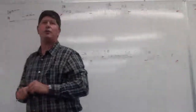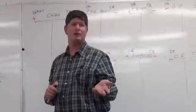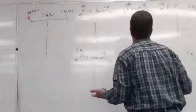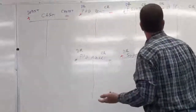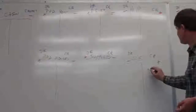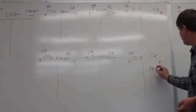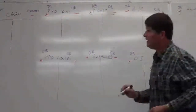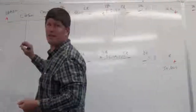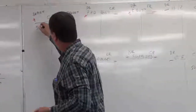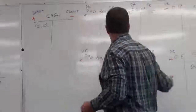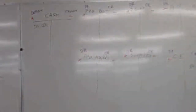Transaction 1: we put in $50,000 to start the company. Owner's equity goes up — it's a credit, it increases on the credit side. And cash goes up — which is a debit. Do my debits equal my credits? I'm in balance.